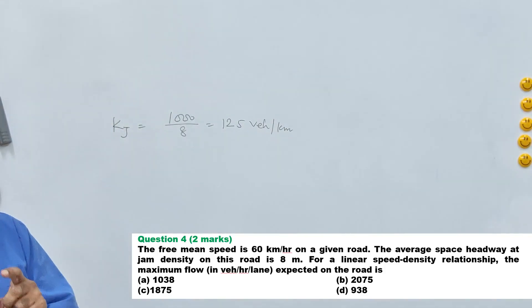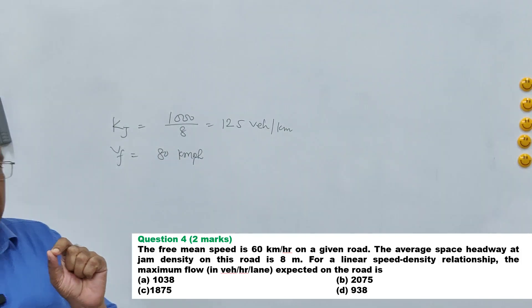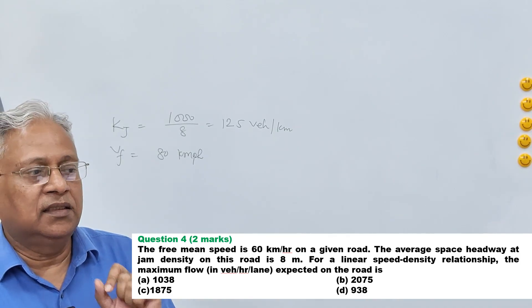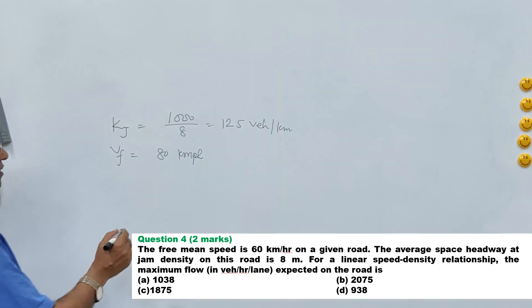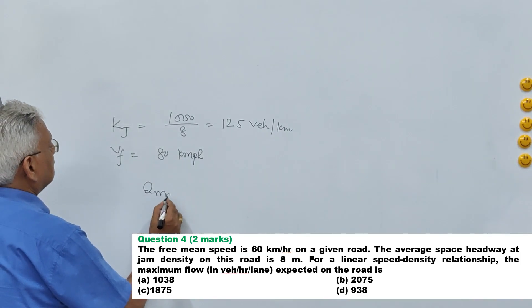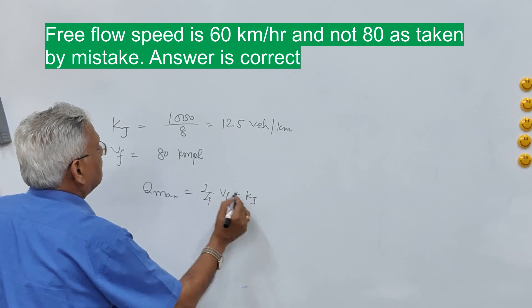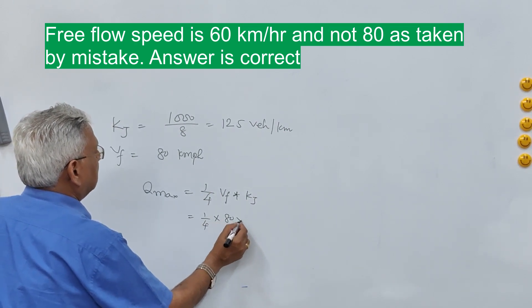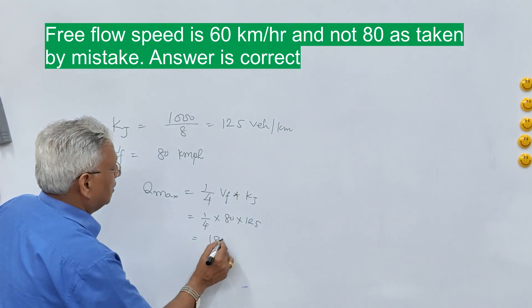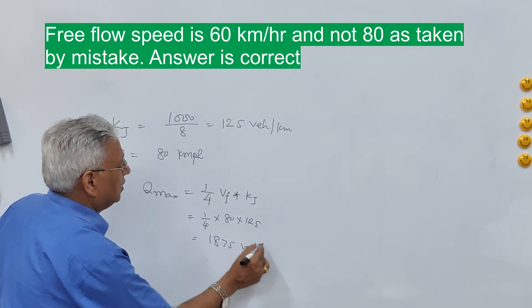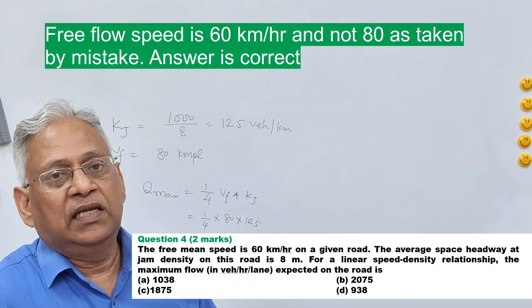The linear relationship between speed and density represents the Greenshield equation. According to Greenshield's equation, the maximum flow or capacity Q_max equals one-fourth of free flow speed multiplied by jam density: (1/4) × 80 × 125 = 1875 vehicles per hour. That is the capacity. Looking at the options, option C is 1875, which is the correct answer.